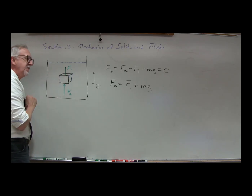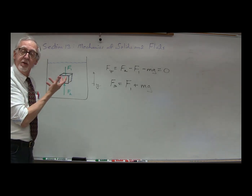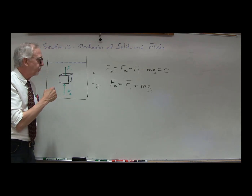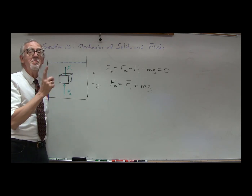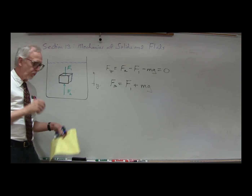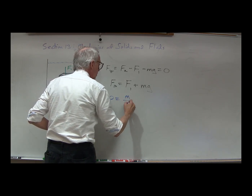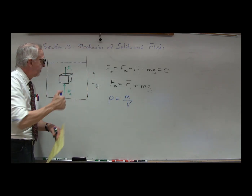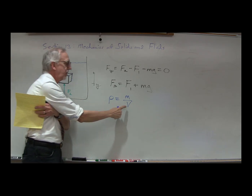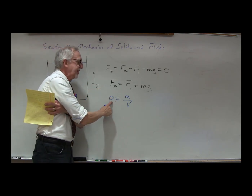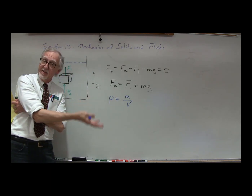We've taken out that water and put in some block — whatever material that block is. The weight is different, assuming the weight of the block is different than the weight of the water, which would be true. The volumes are the same; the weights would be different if the masses were different, and the masses would be different if the densities were different because the volumes are equal. Density equals mass over volume.